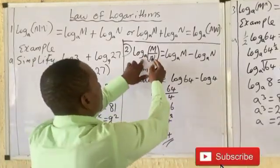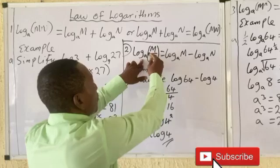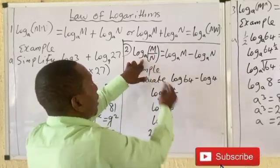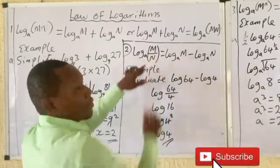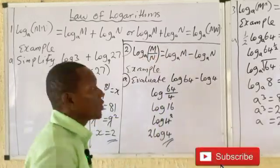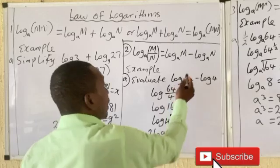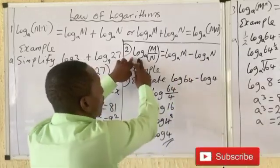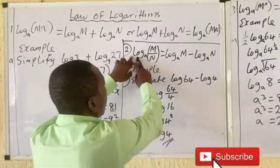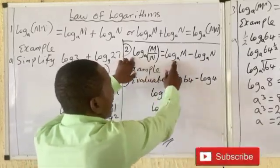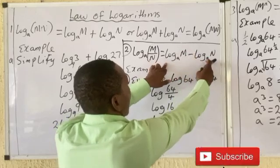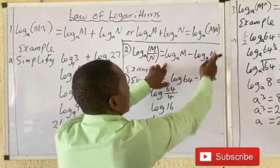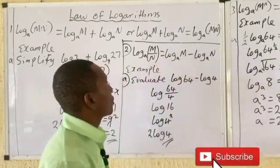The second law: log base a of (m over n) — when it's a division sign inside the bracket — equals log base a of m minus log base a of n. Both terms share a common base and the division becomes subtraction.